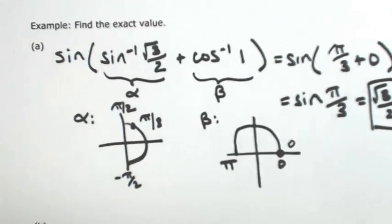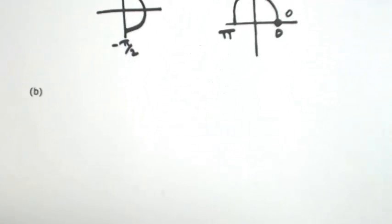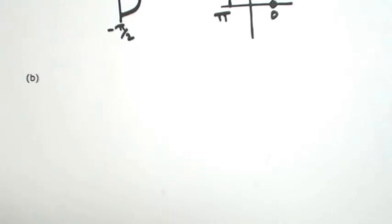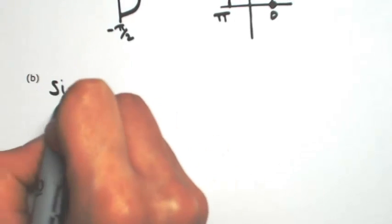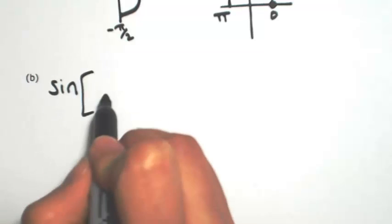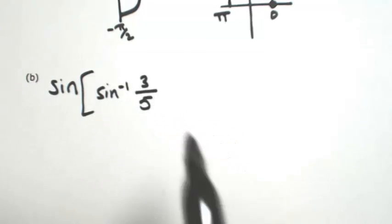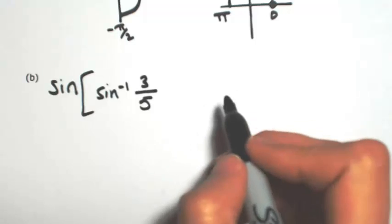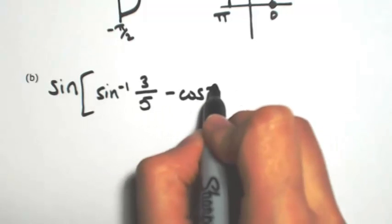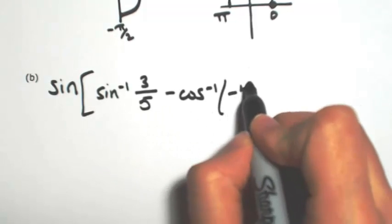Now let's say that we have some inverses of some not-so-common values. So let's do a sine again. So the sine of, let's do the inverse sine of 3 fifths minus inverse cosine of negative 4 fifths.